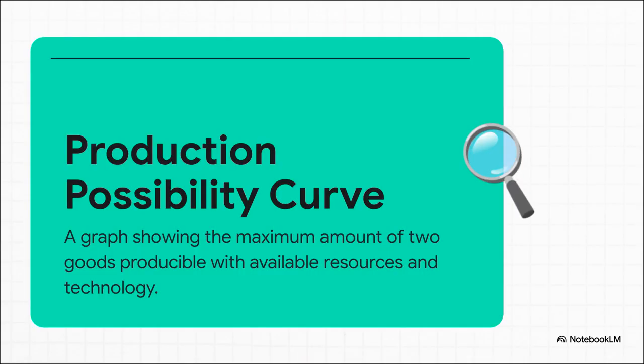To help visualize this, economists use a really neat tool called the Production Possibility Curve, or PPC. Don't let the technical name throw you — just think of it as a boundary of what's possible. Everything inside that line, you can do. Everything outside of it, not possible. At least, not right now.